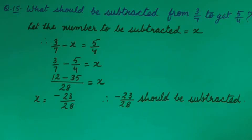Because x is negative, so we will transpose it to make it positive. And 5 upon 4 when transposed, it will be minus 5 upon 4. So situation is 3 upon 7 minus 5 upon 4 equal to x.